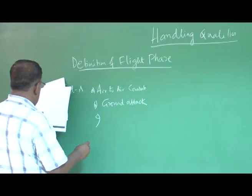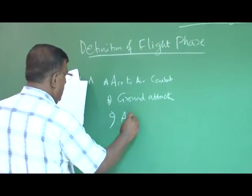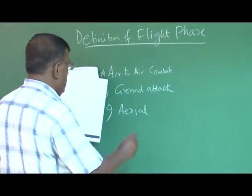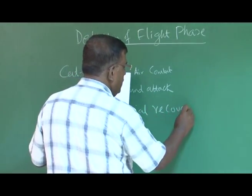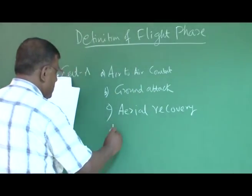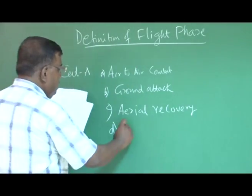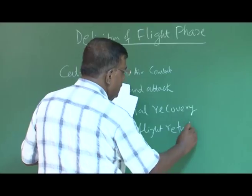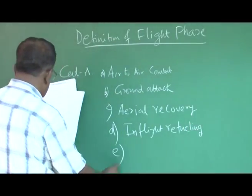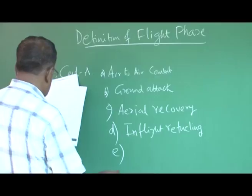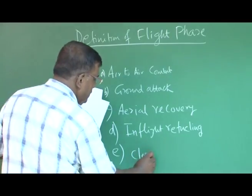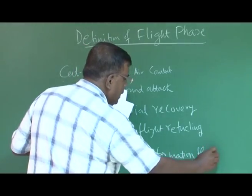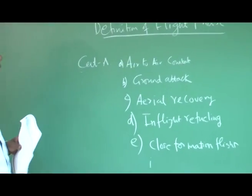Category A flight phases also include in-flight refueling and close formation flight, among many others. You can search for the complete list. This material is presented referring to the book by Roskam.